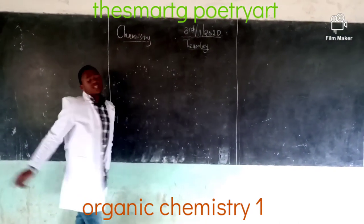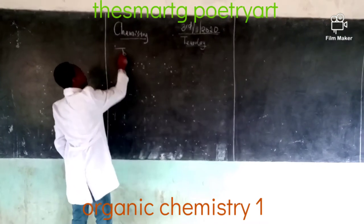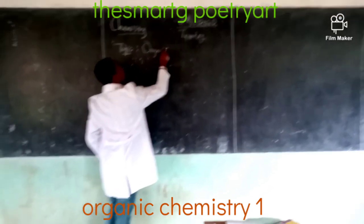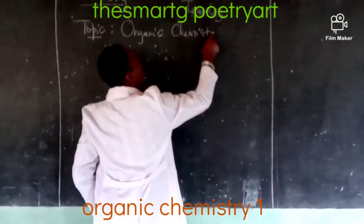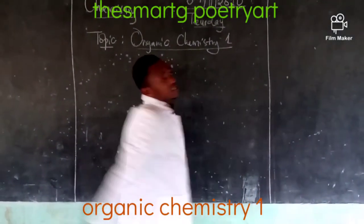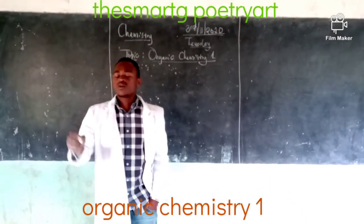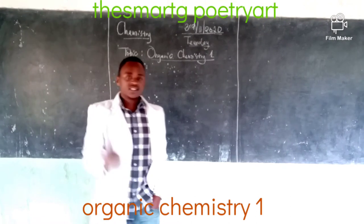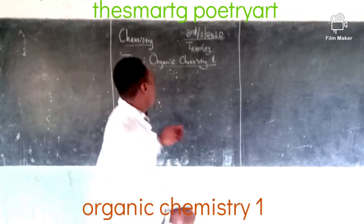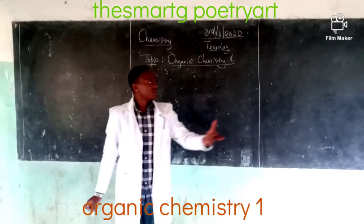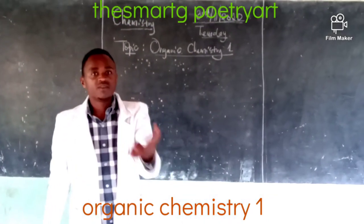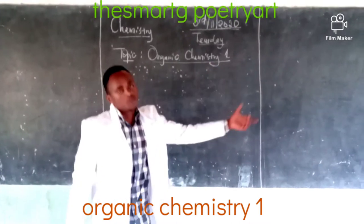We are still under the topic organic chemistry 1. Remember, what comes to mind when you hear organic chemistry — you have hydrogen atoms and carbon atoms. As we say, it's the study of hydrocarbons. Last time we talked about the general formulas of these hydrocarbons and how we generate these formulas in those homologous series.